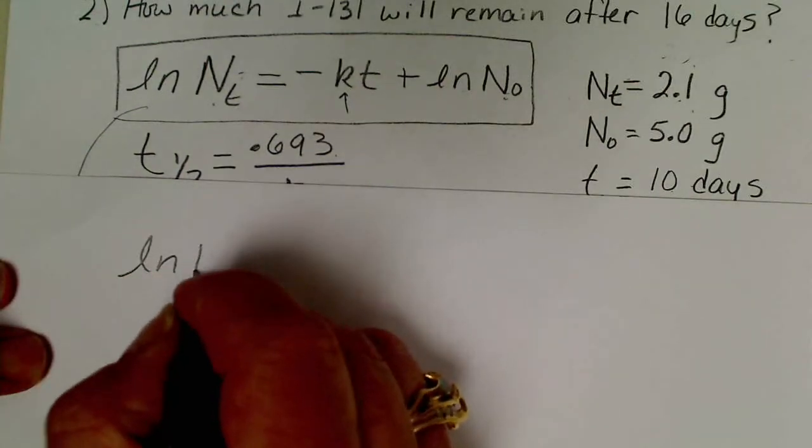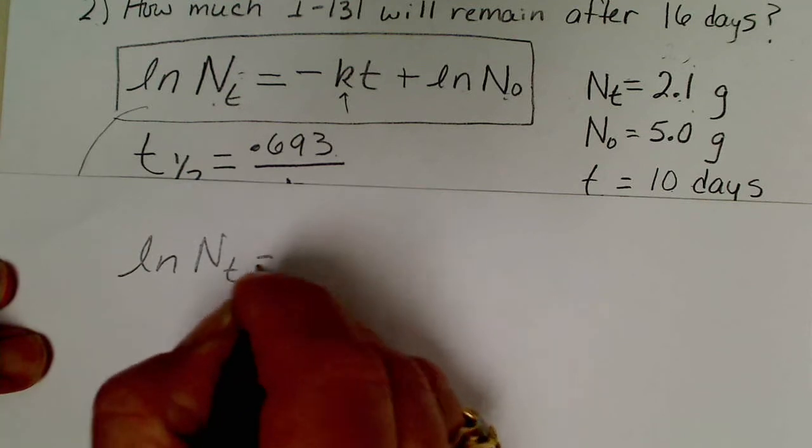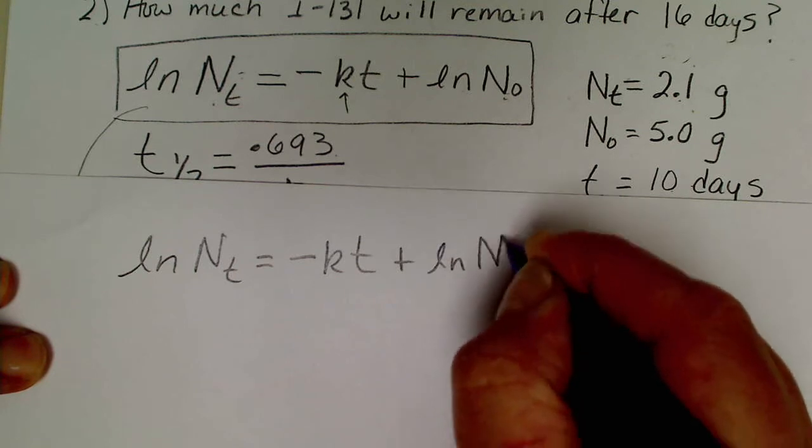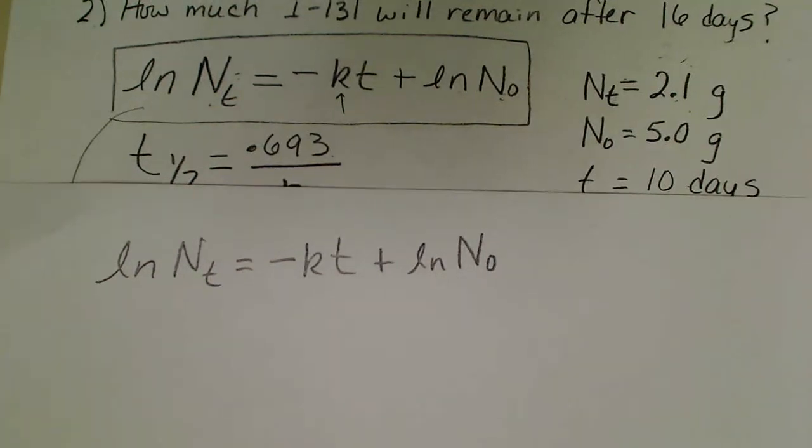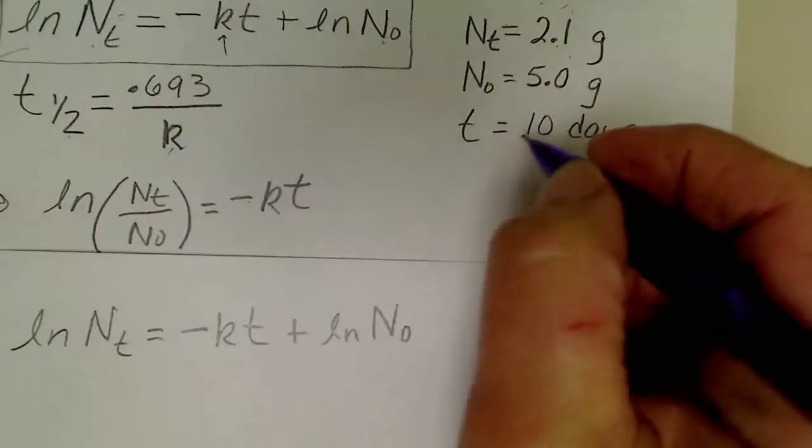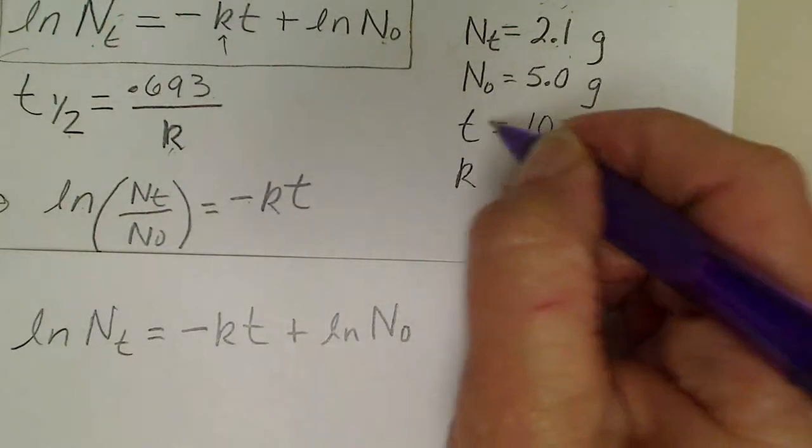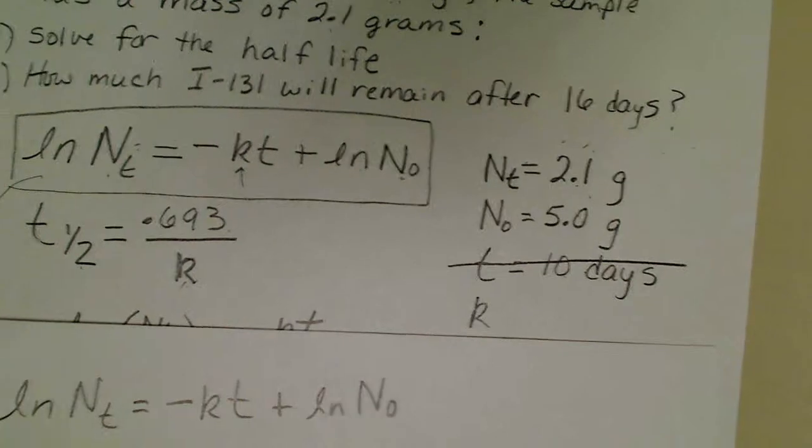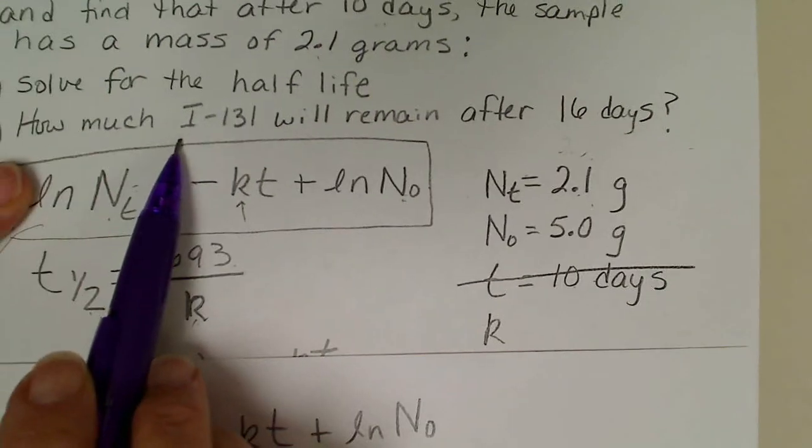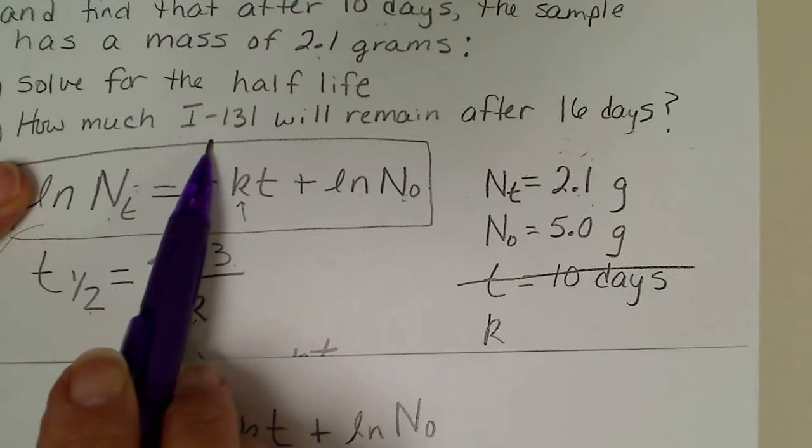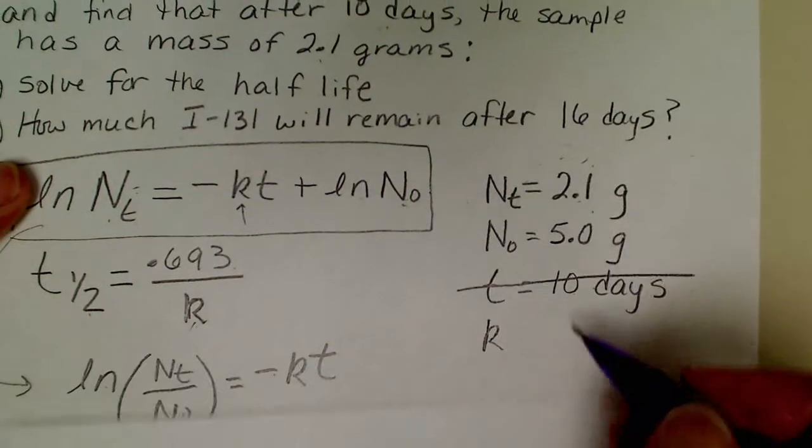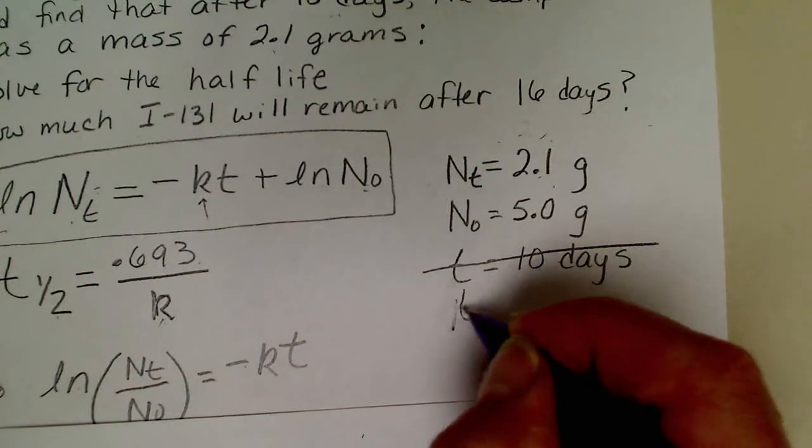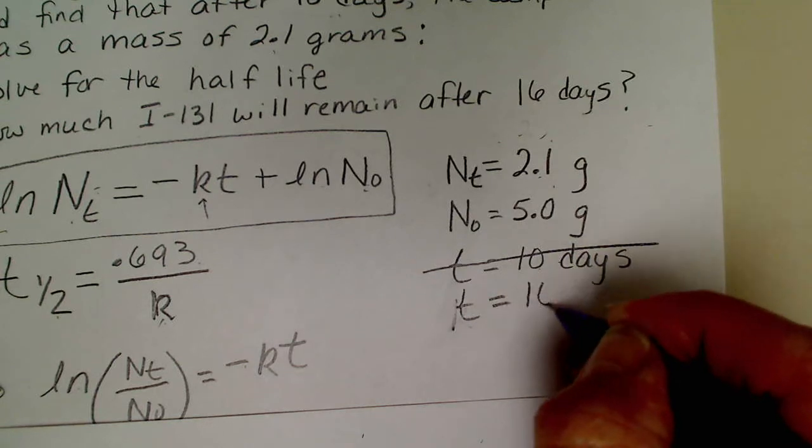We've got the natural log of N at time t equals negative kt plus the natural log of the initial amount. Now I know k and my t value has changed for the problem. How much iodine-131 will remain after 16 days? So now t is 16 days.